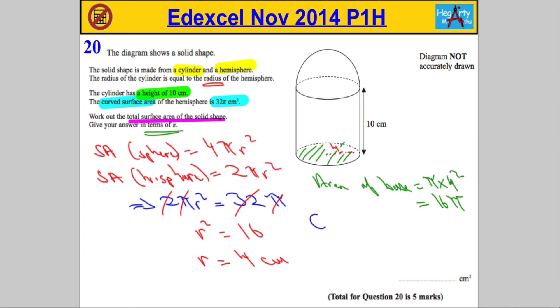So the curved surface area of the cylinder is going to be the circumference of the base, which is π times d, which is going to be 8π, times by the height, which is 10. So that's got to be 80π.